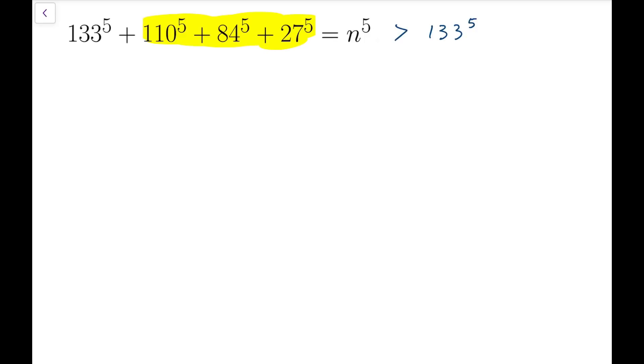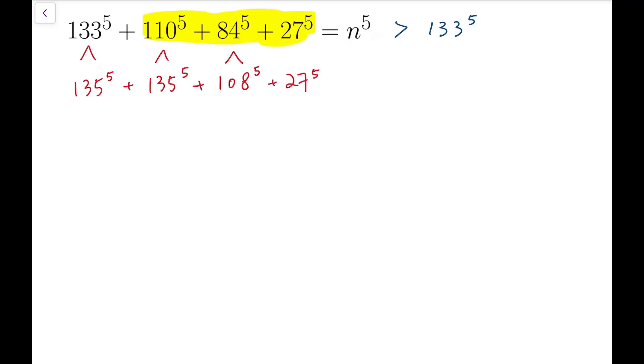The next thing I'm going to do is consider multiples of 27 by saying that 84^5 is less than 108^5. It's a multiple of 27. And actually for these two numbers, they are both less than 135^5. So n^5 is less than 27^5 multiplied by 1 plus 4^5 plus 5^5 plus 5^5.